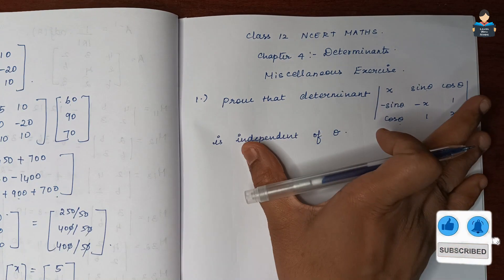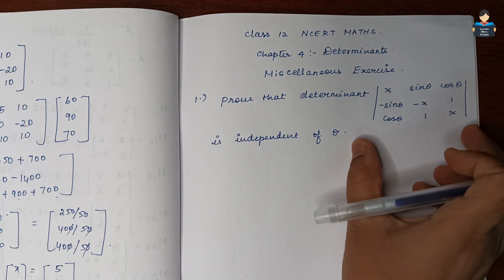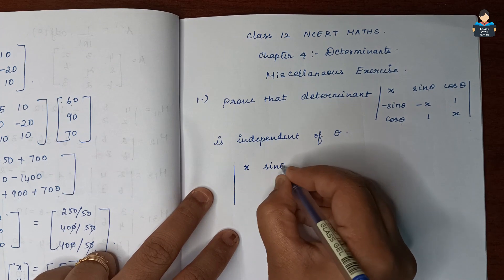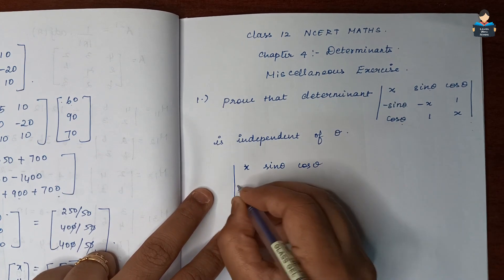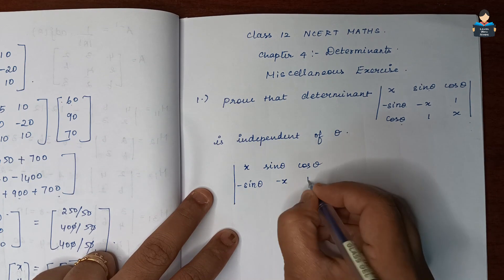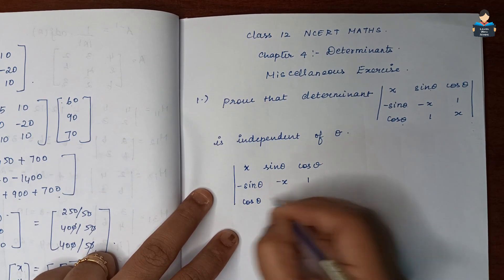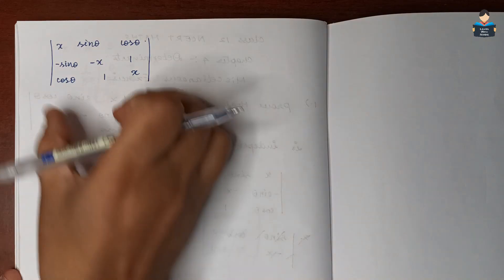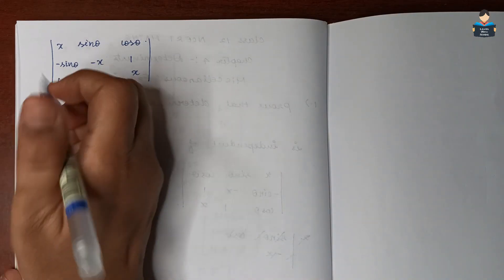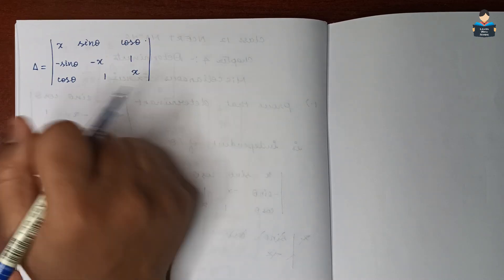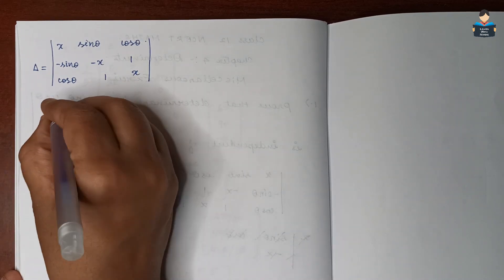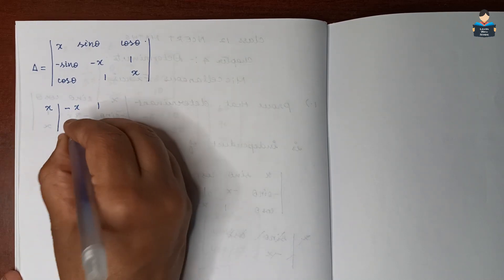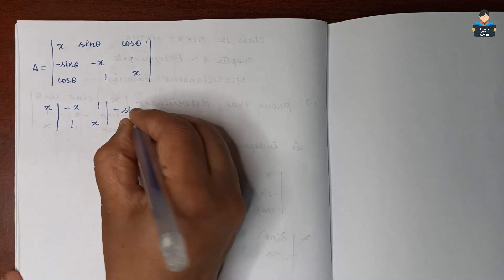So this is the determinant we need to find. Expanding along the first row: for the element x, we omit its row and column. The remaining minor involves minus sin theta and other terms.